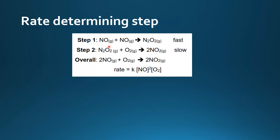The rate of reaction depends on the concentration of the two reactants. However, N₂O₂ is produced in the fast step, and the production of N₂O₂ depends on the concentration of NO.